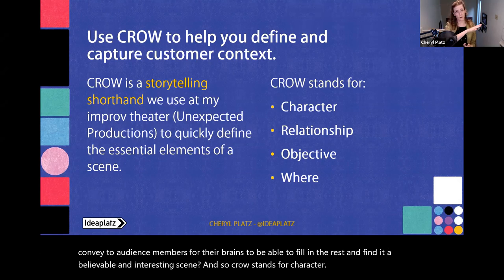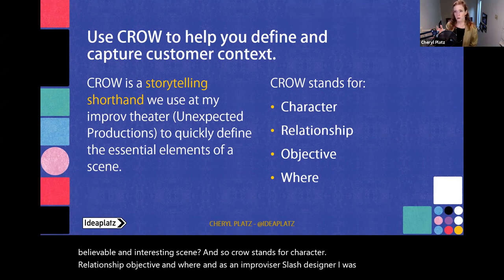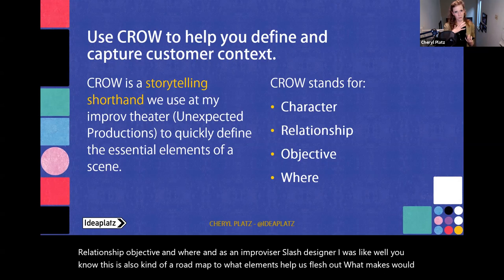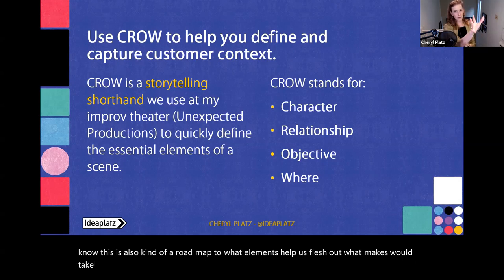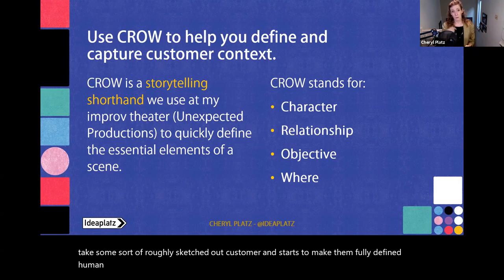What I teach in my book is using a storytelling shorthand from my improv theater, Unexpected Productions, which performs in the Pike Place Market in Seattle. When you're being paid to perform for people, there's special pressure because they expect the scene to be interesting. One of our improvisers came up with a shorthand for the basic components needed to convey to audience members so their brains can fill in the rest and find it believable. CROW stands for Character, Relationship, Objective, and Where. As an improviser and designer, I realized this is a roadmap for what elements help us flesh out a fully defined human individual — and a reminder of what questions we want to ask.